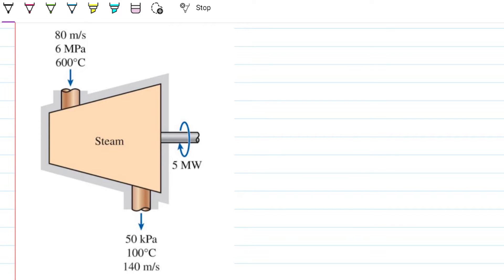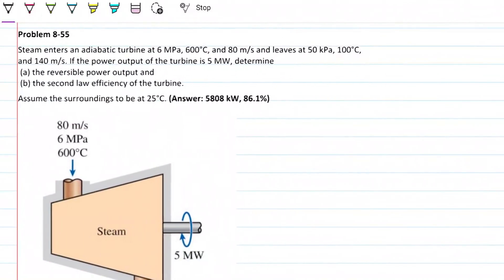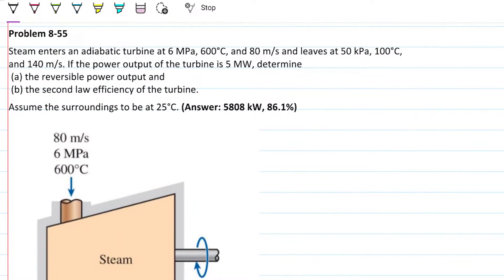So if you're not comfortable with these things yet, this is a big one. But if you're on top of everything and comfortable with the ideas so far, you should be fine. Let's read problem 8.55. Steam enters an adiabatic turbine at 6 MPa, 600 degrees Celsius and 80 meters per second, and leaves at 50 kPa, 100 degrees Celsius and 140 meters per second. If the power output of the turbine is 5 MW, determine the reversible power output and the second law efficiency. Assume the surroundings to be at 25 degrees Celsius.